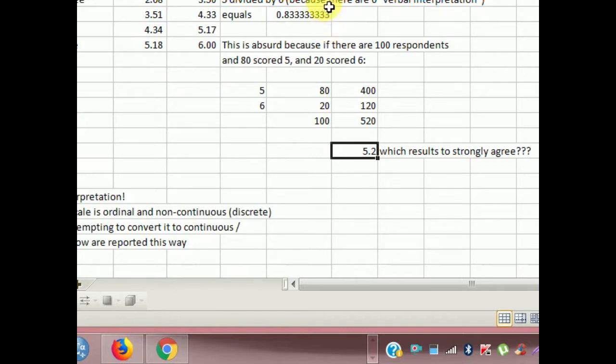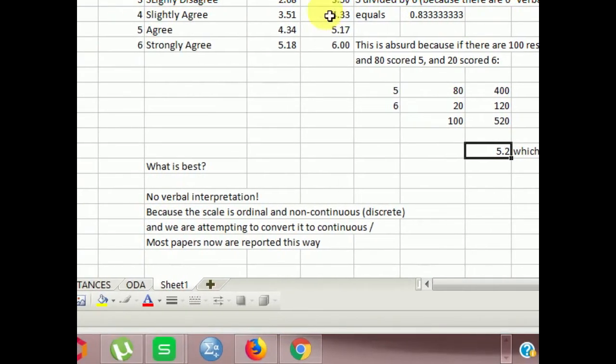So what is my proposition? My proposition is not to use verbal interpretation anymore. What is best? No verbal interpretation. No one is doing that anymore in the international scene. The scale is ordinal and non-continuous. They are discrete, and we are attempting to convert it to continuous data. If it's non-continuous, why would you convert it to continuous data? Most papers now in the international scene are reported this way.